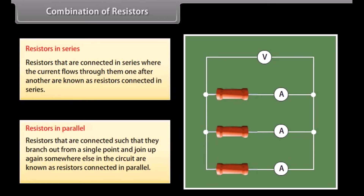Resistors in parallel: resistors connected such that they branch out from a single point and join up again somewhere else in the circuit are known as resistors in parallel. Here, the current through each component is the same as if it were the only component present, so the total current flowing through the battery is the sum of the currents flowing through each branch.